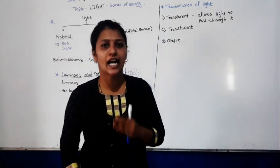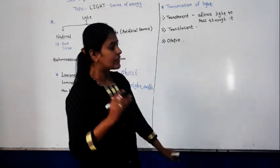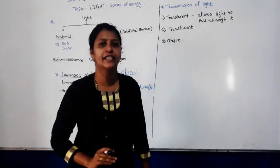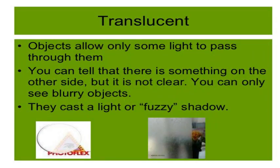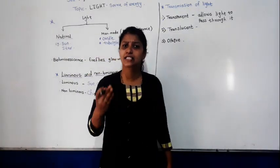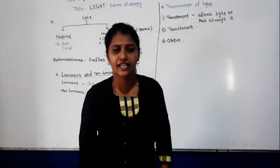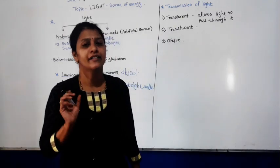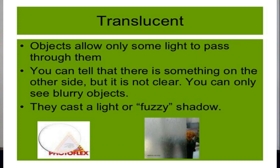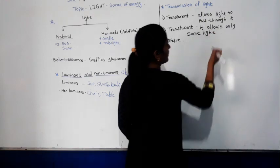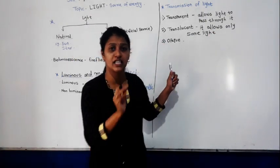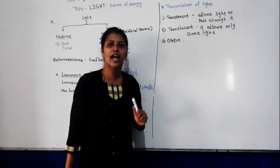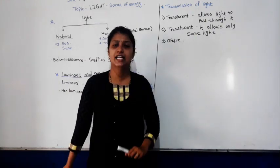The next type is translucent. Translucent means the material through which only some light passes. For example, tissue paper and butter paper. If you take tissue paper, you can see a blur image behind it. It allows only some light to pass through it, so we can see the image a little bit blurred. That material is called a translucent material.